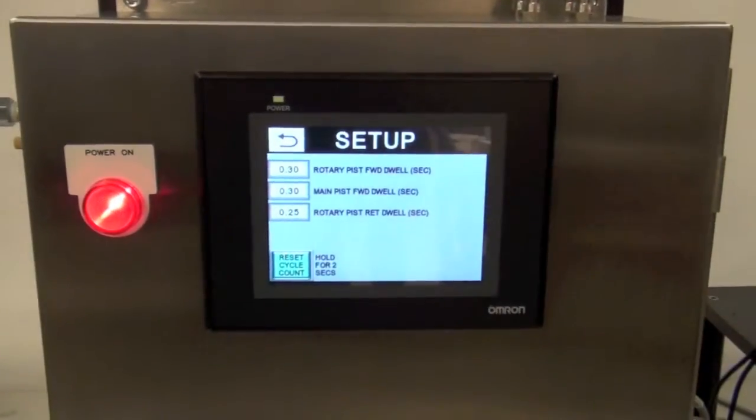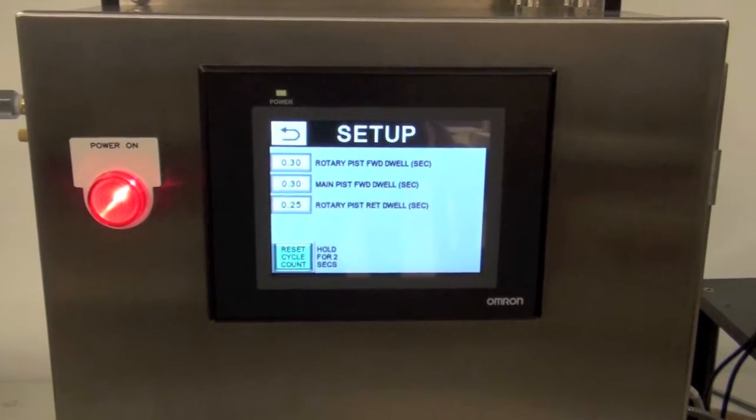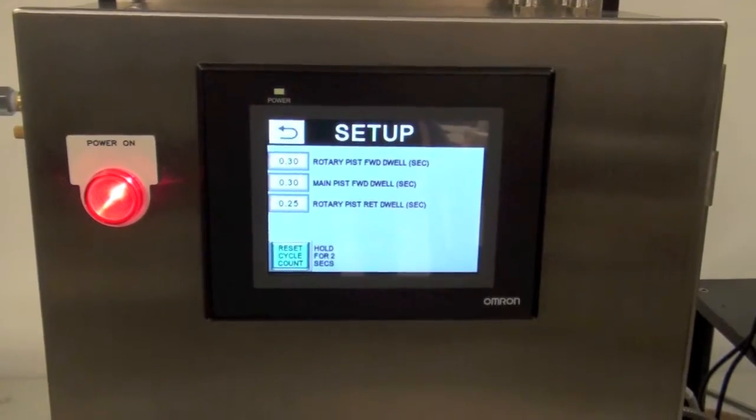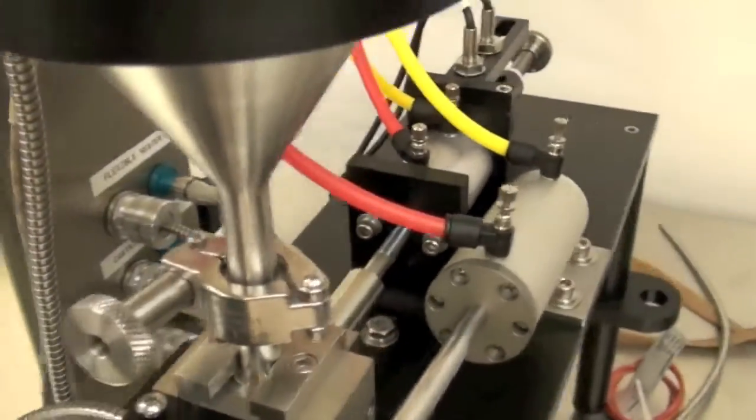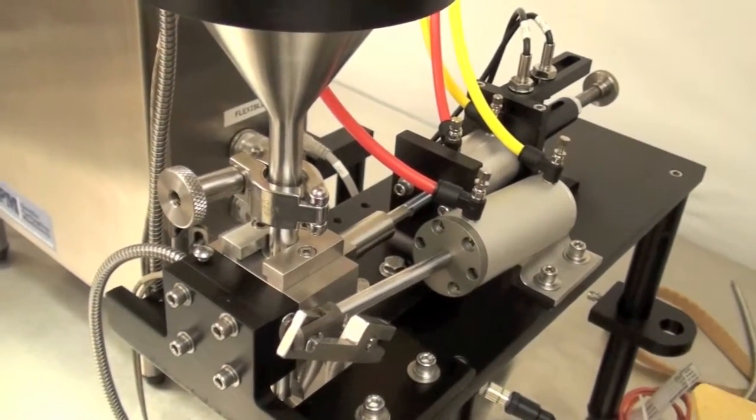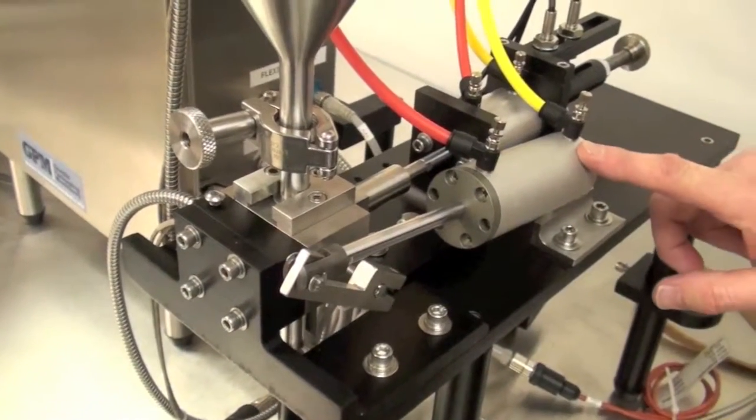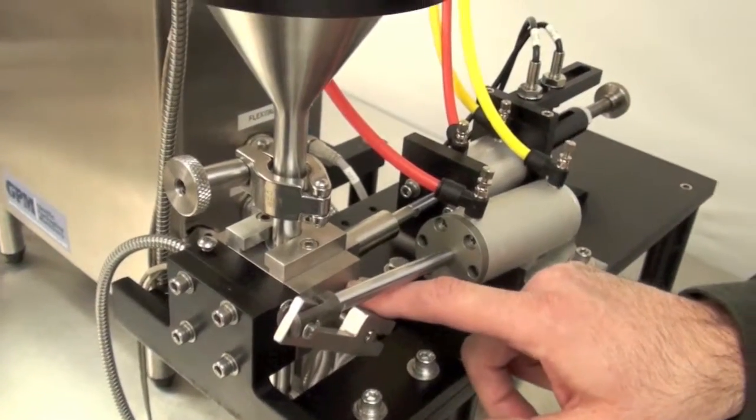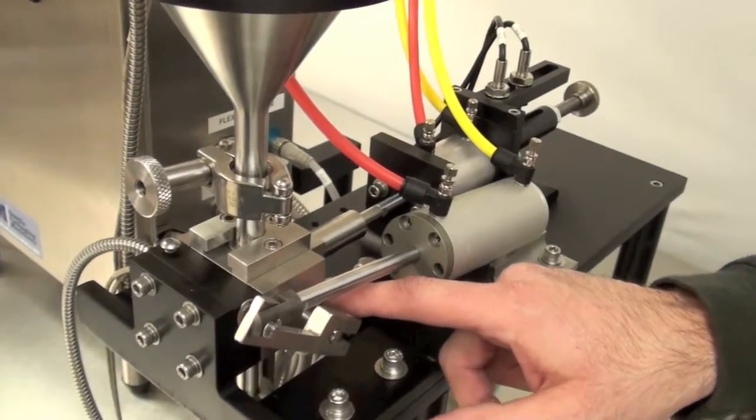This setting indicates how long after the valve opens before the main piston moves forward dosing. So if you look over here, when the product cycle is initiated, the first thing that will happen is that the rotary piston will move back to allow for dispensing.